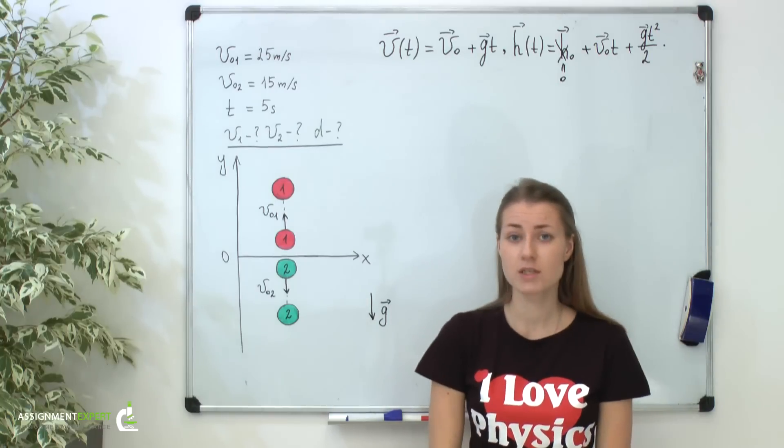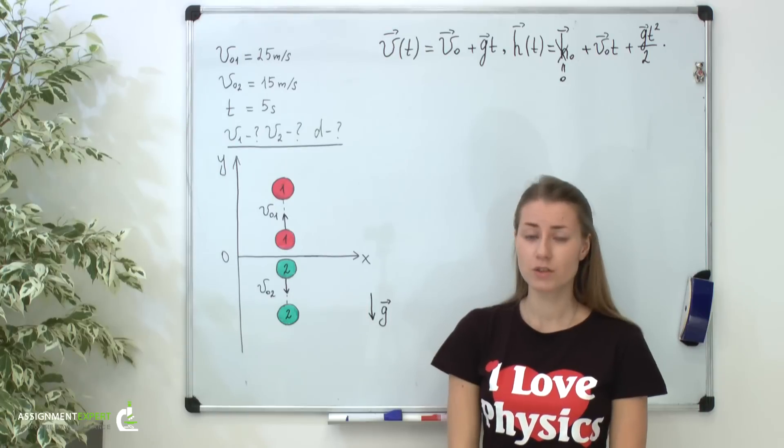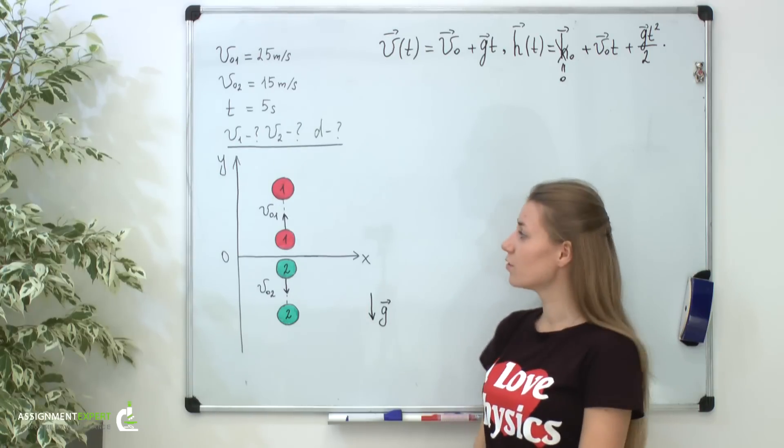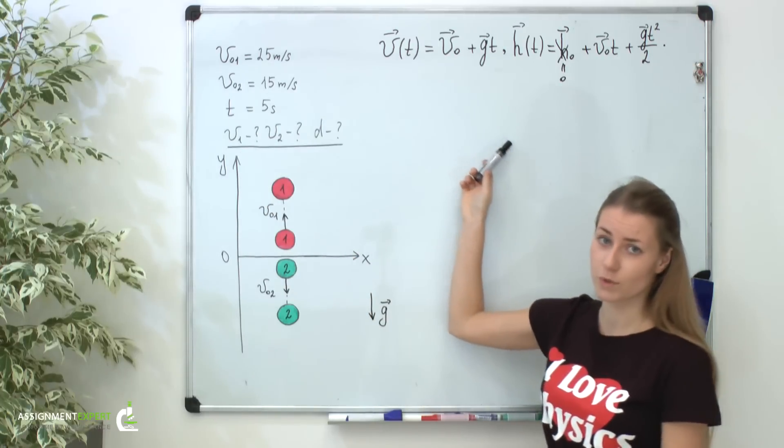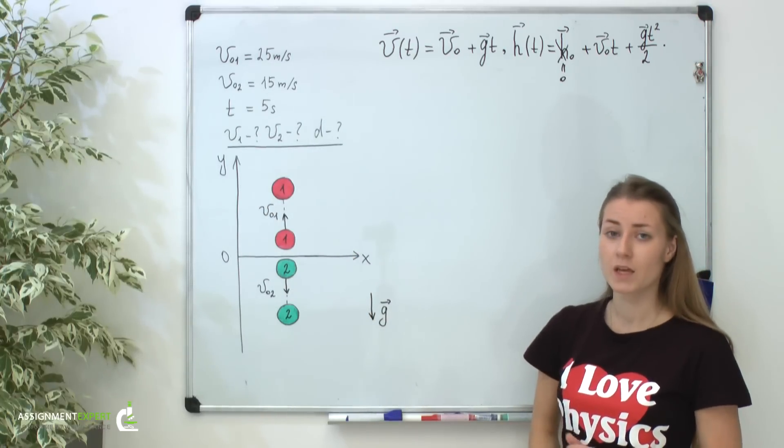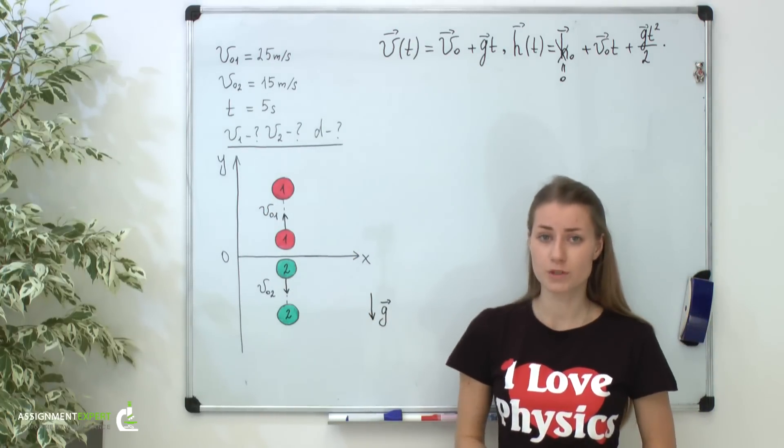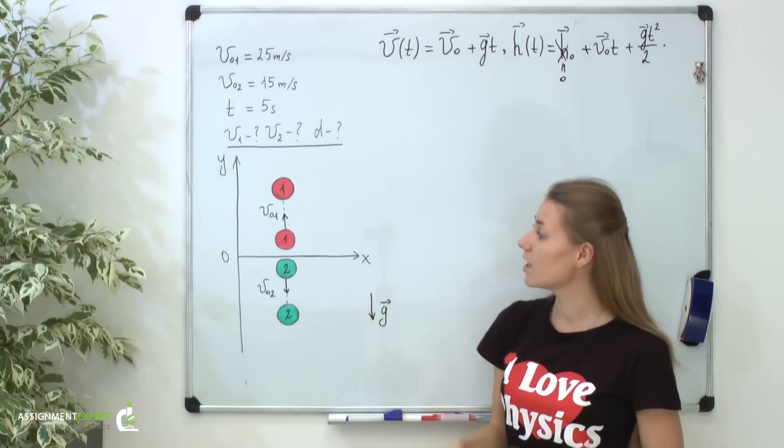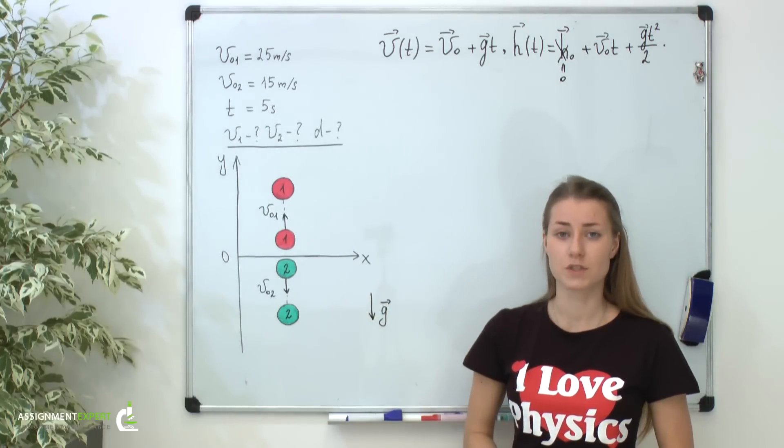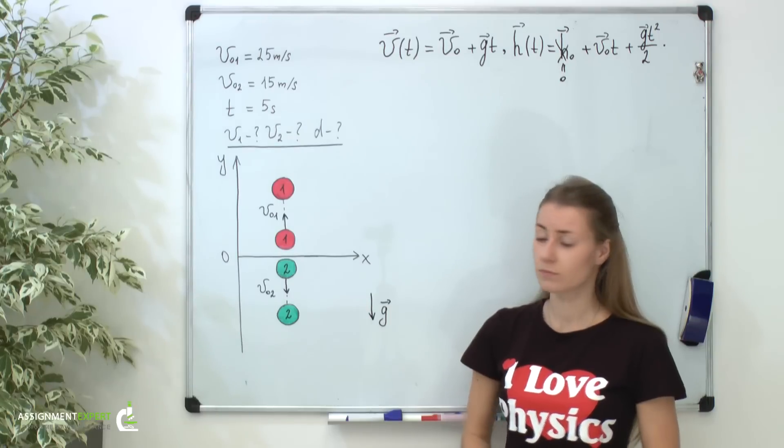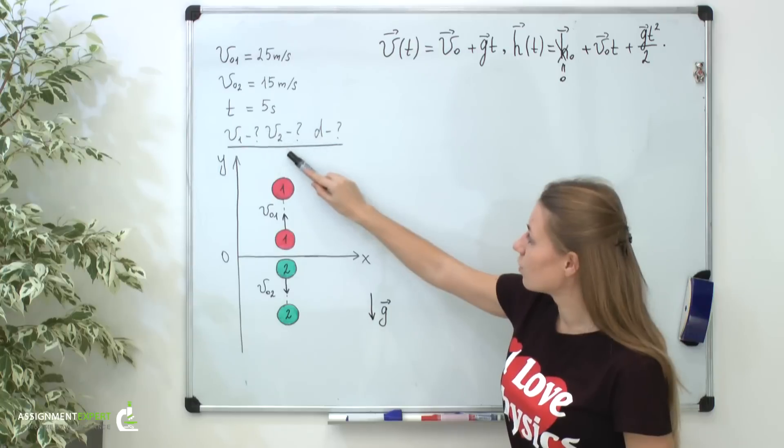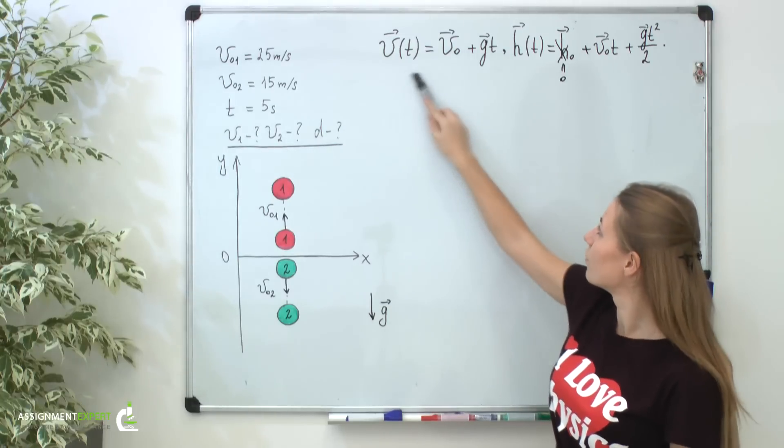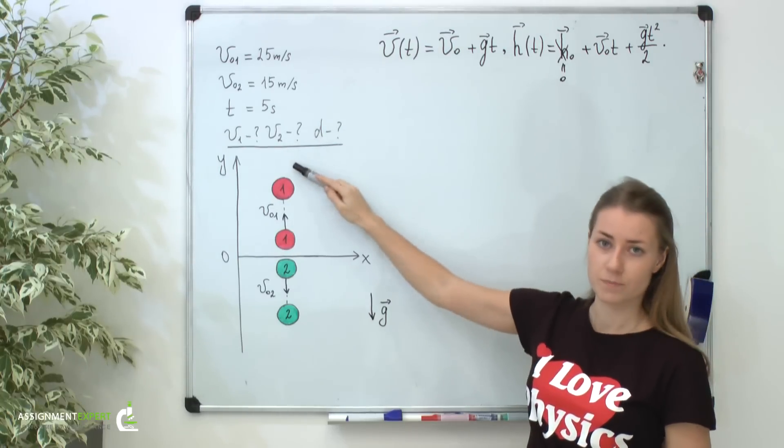But at this step, guys, you have to be very careful. Don't forget to take into account the relative direction of the y-axis and all of the quantities which are going to be projected. If any quantity holds the opposite direction from the y-axis, it will be projected with a negative sign. It's a rule. So, to find velocities v1 and v2 of t, you have to project the first equation on the y-axis.